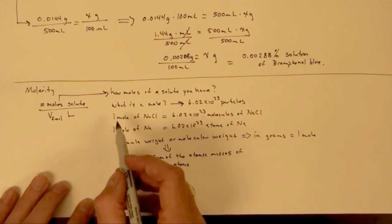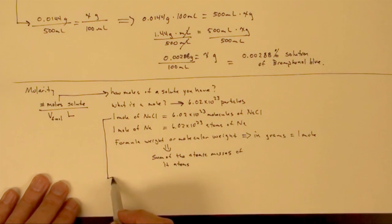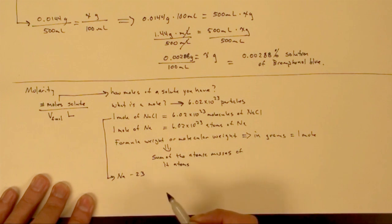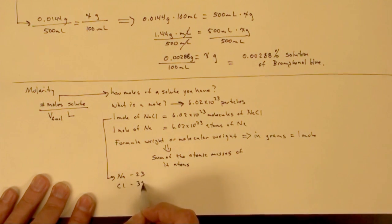So if we use our example here, sodium, the molecular weight of sodium is 23, the molecular weight of chlorine is 35.